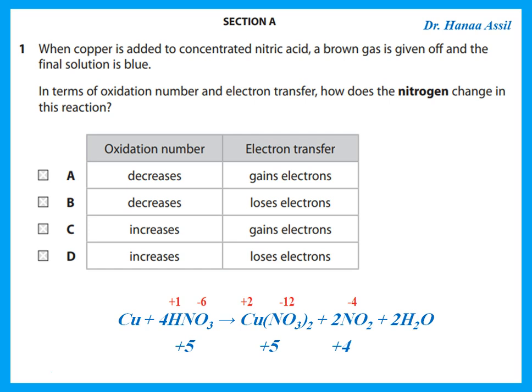In NO₂, each oxygen is −2, so two oxygens are −4, meaning nitrogen is +4. The oxidation number goes from +5 to +4, so it is decreasing. A decrease in oxidation number is reduction, which means gain of electrons.